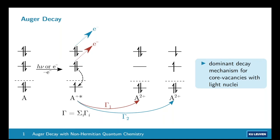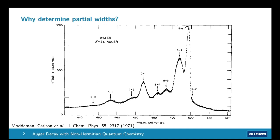Auger spectra are made by measuring the kinetic energy distribution of the outgoing Auger electrons. Each peak corresponds to exactly one dicationic target state of Auger decay, and we can compute these via quantum chemical methods by computing the energy difference between the initial and final states. However, the key question is peak intensity — how much of the core-ionized species decays to each state. The peak area is proportional to the partial decay width, which is essential for reproducing the spectral shape.